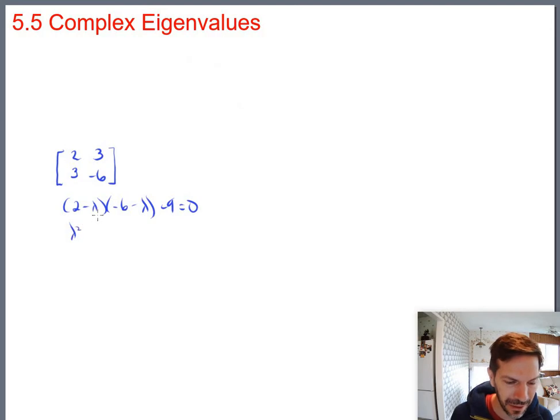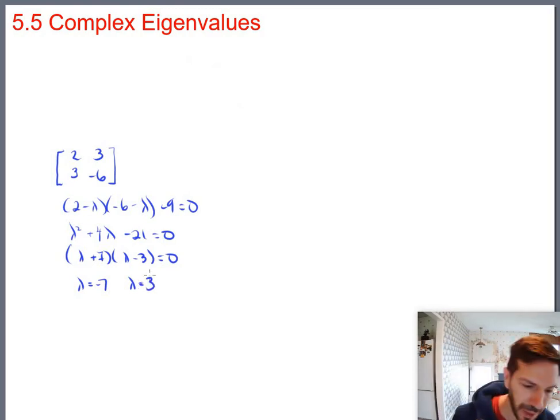It would be 2 minus lambda, negative 6 minus lambda, minus 9 equals 0. So that would be lambda squared, 6 lambda minus 2 lambda is 4 lambda. And then minus 12 minus 9, so minus 21 equals 0. So you'd get lambda plus 7 and lambda minus 3. So eigenvalues there are negative 7 and 3.